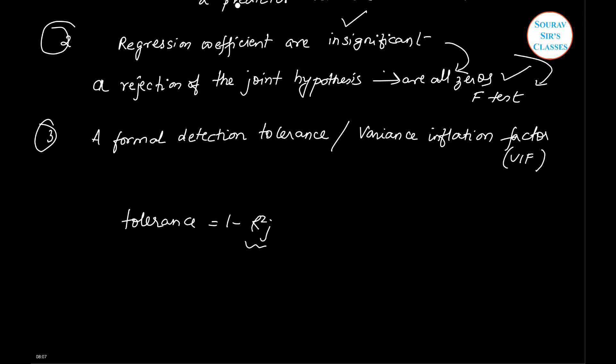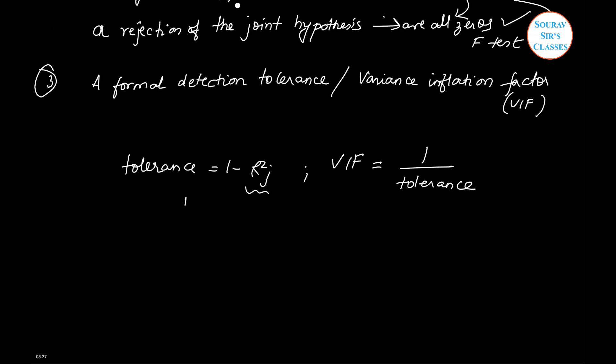Tolerance or the variance inflation factor, termed as VIF, for multicollinearity. So tolerance is equal to 1 minus R squared j, where this is the coefficient of determination of the regression. And VIF is equal to 1 by tolerance. So a tolerance of less than 0.2 or 0.10, that means a VIF of 5 or 10 or above, indicates or signals the problem of multicollinearity.